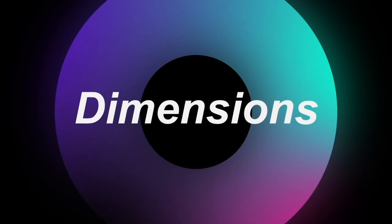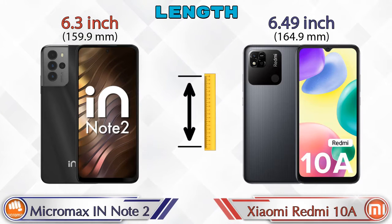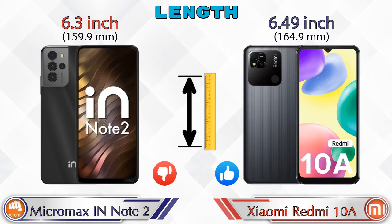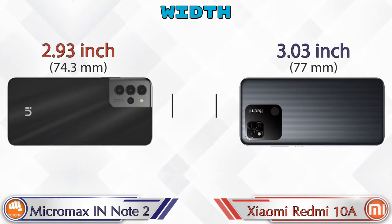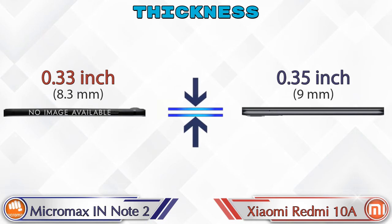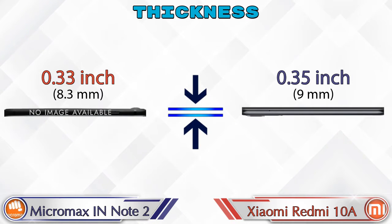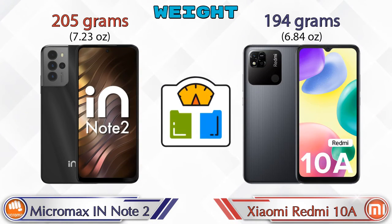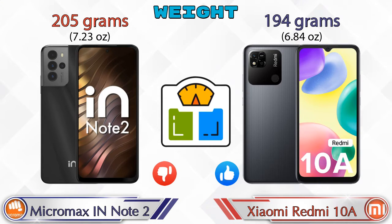Now let's check the dimensions. The length of the IN Note 2 is 6.3 inches and the Redmi 10A is 6.49 inches. Width on the IN Note 2 is 2.93 inches and the Redmi 10A is 3.03 inches. Thickness on the IN Note 2 is 0.33 inches and the Redmi 10A is 0.35 inches, which is bigger than the IN Note 2. Weight: the IN Note 2 is 205 grams and the Redmi 10A is 194 grams.